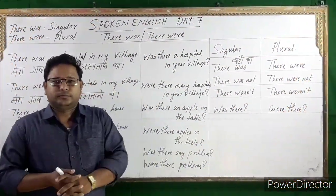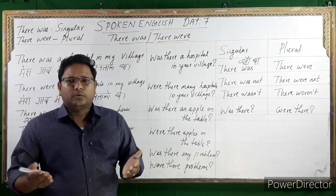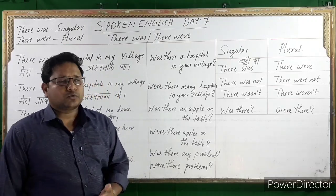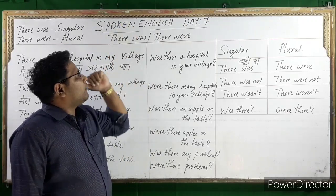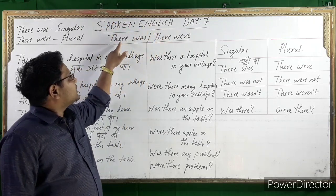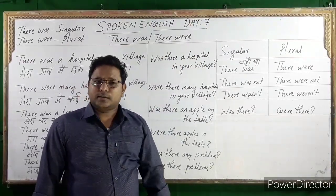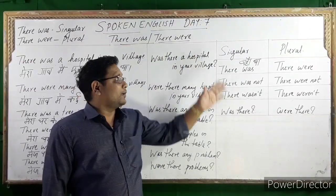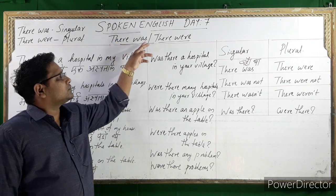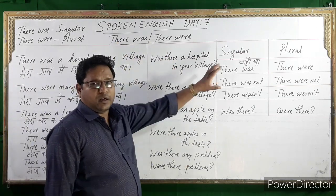Hi friends, welcome to our videos. I am Sajju Thomas. Today our topic is 'there was' and 'there were' — this is a spoken English class. Today I have selected the subject 'there was' or 'there were'. See, look at the board here.